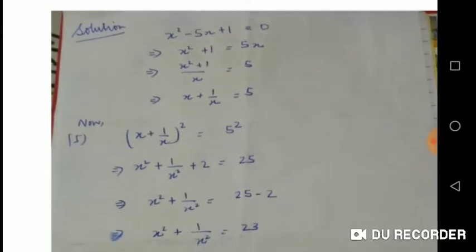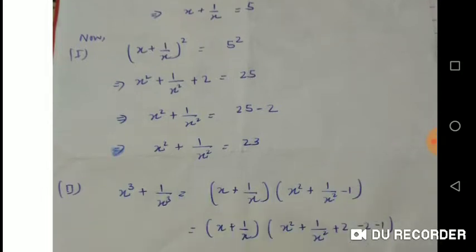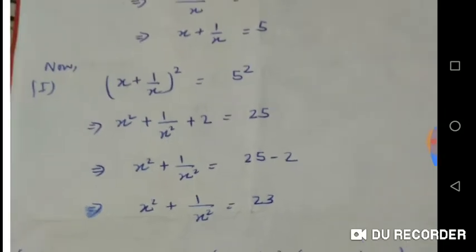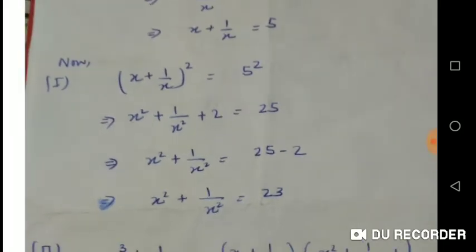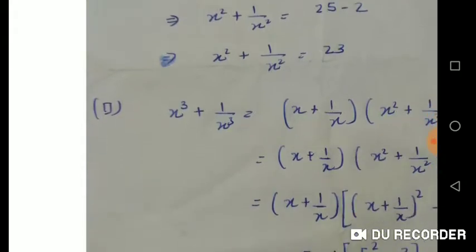Through this expression we will calculate the four given expressions. First expression is x² + 1/x². For that I will square this equation. It will give me x² + 1/x² + 2 = 25, then x² + 1/x² = 23.